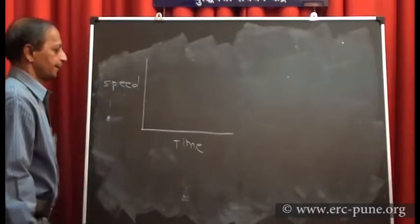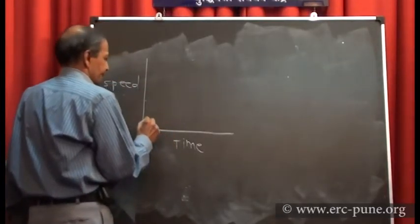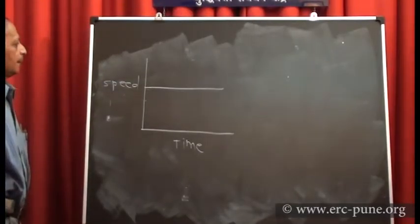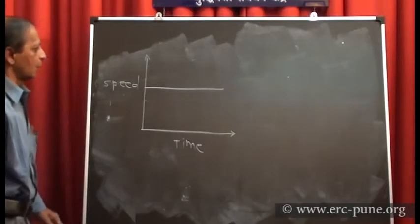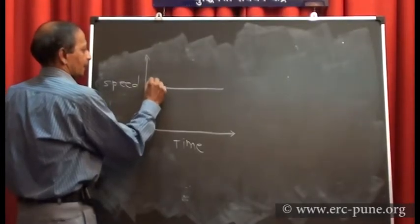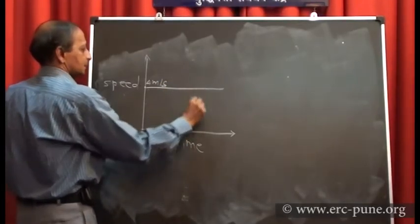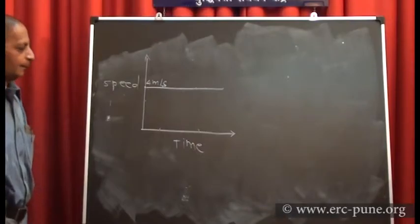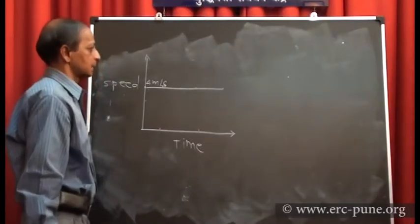Suppose you plot a graph of speed versus time, and the graph is parallel to the time axis. The speed is, say, 4 meters per second. After 1 second it is 4 m/s, after 2 seconds it is 4 m/s, after 3 seconds again 4 m/s. So the speed of the particle is not changing — the speed is uniform.